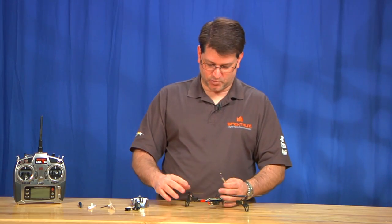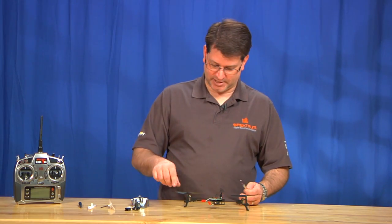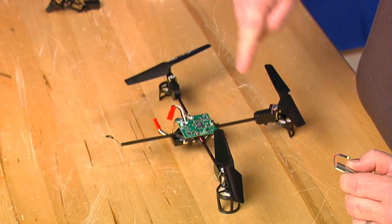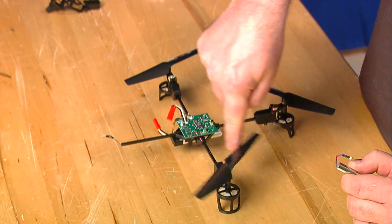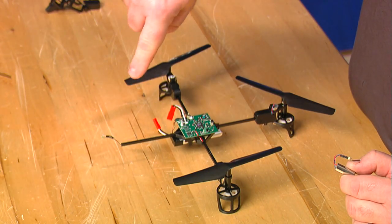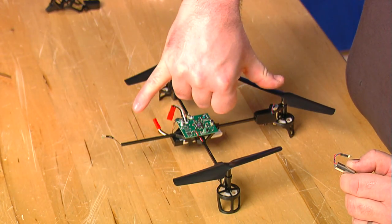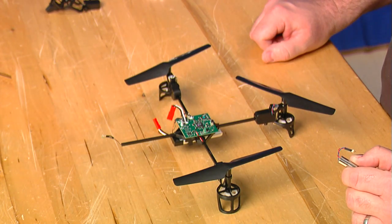And the props as well will give you a hint as to which way they go. If you look at the props, you can see this prop spins clockwise, this one spins counterclockwise, this one's clockwise again. And when this one goes back on, it'll be counterclockwise. The two motors opposite each other always turn the same direction.